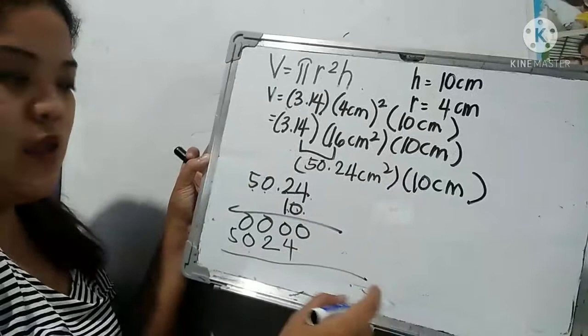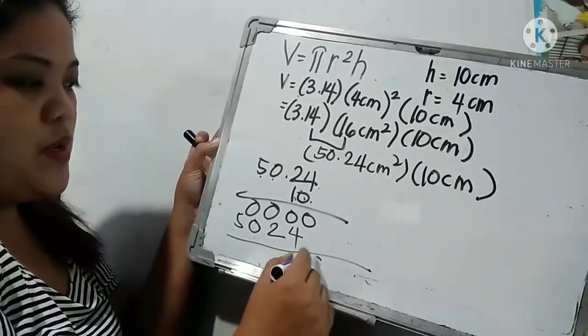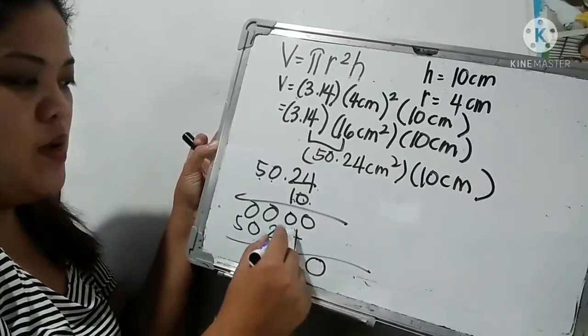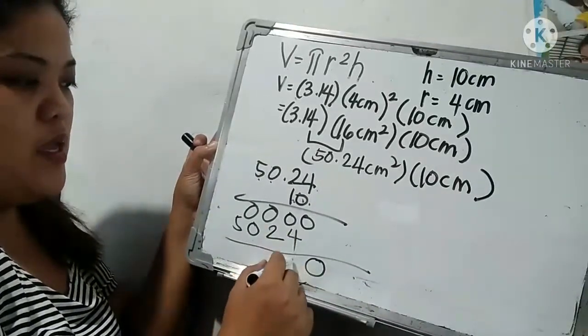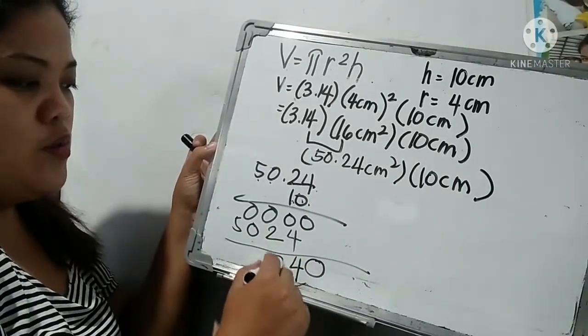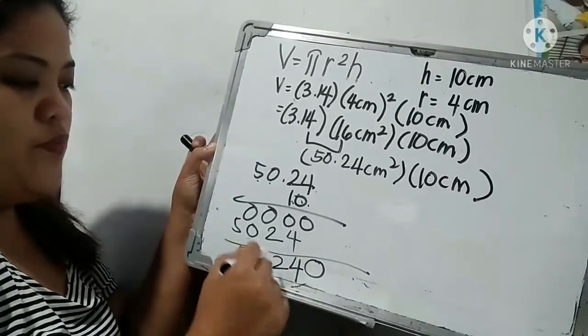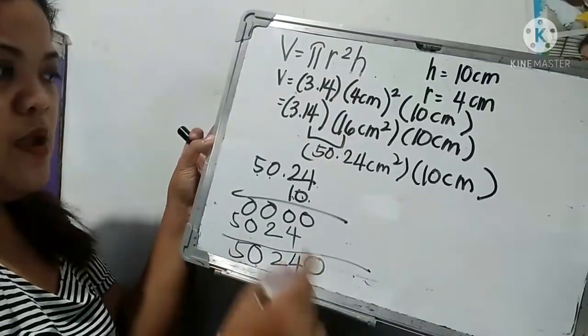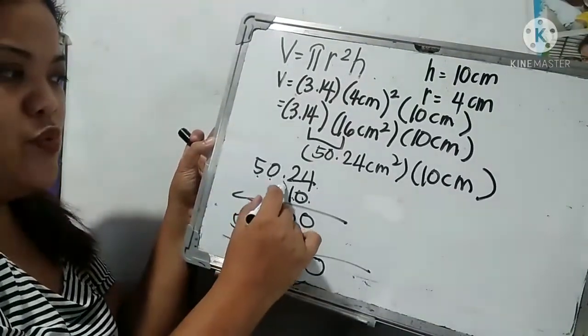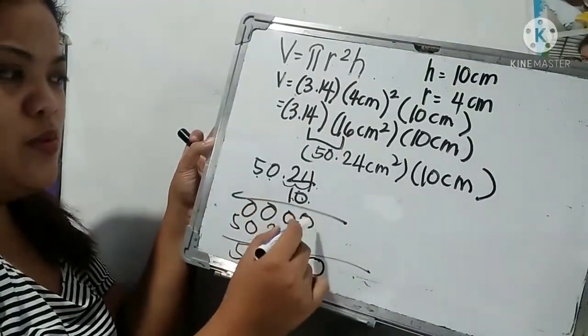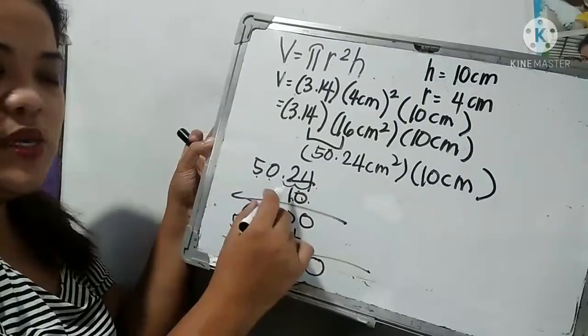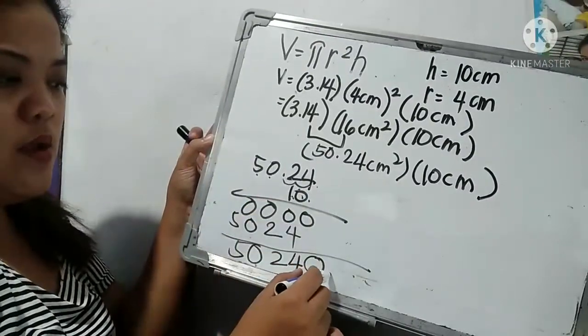Okay, so bring down 0 and then 4, 2, 0, 5. So we have 2 numbers after the decimal point.